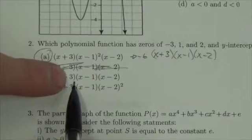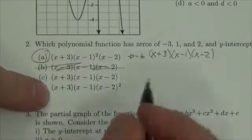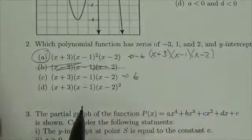If I plug zero in, I'll get 3 times negative 1 times negative 2. Well, that's going to be positive 6. Okay, well that's not correct.